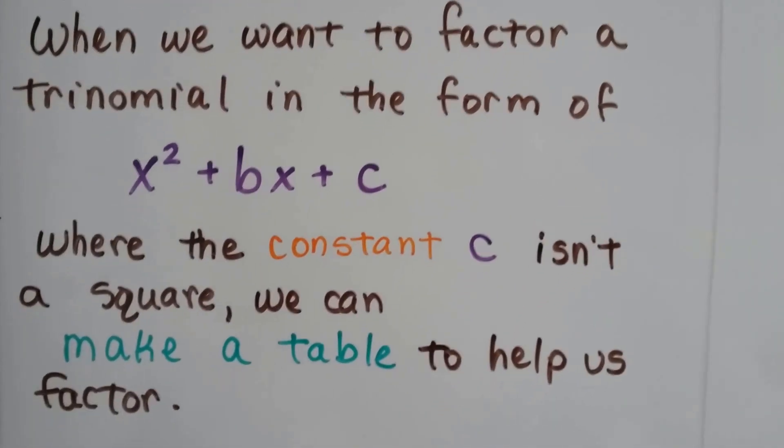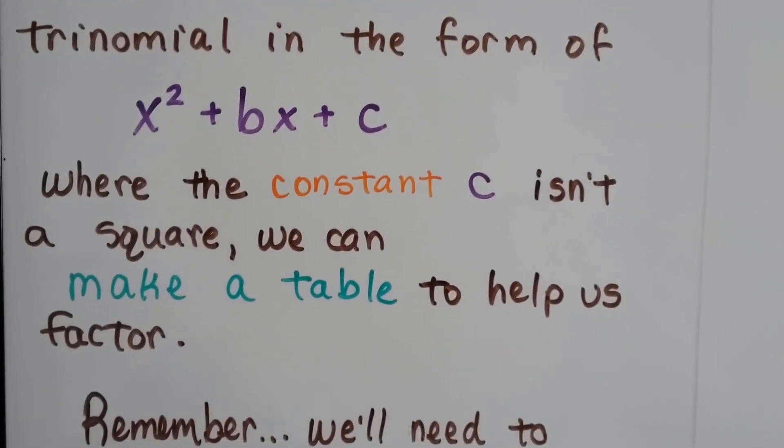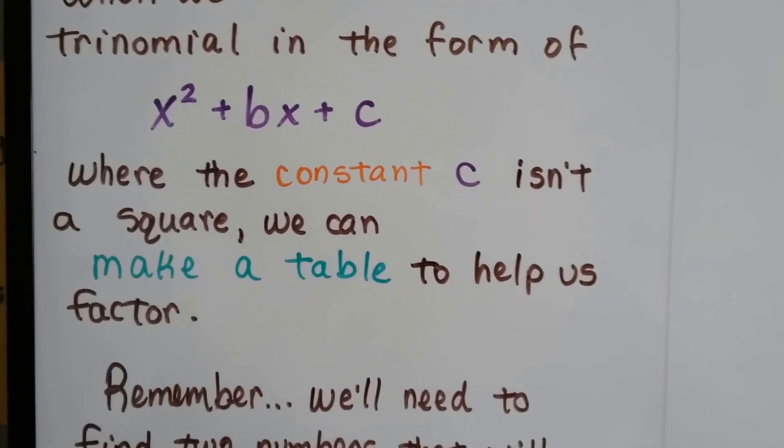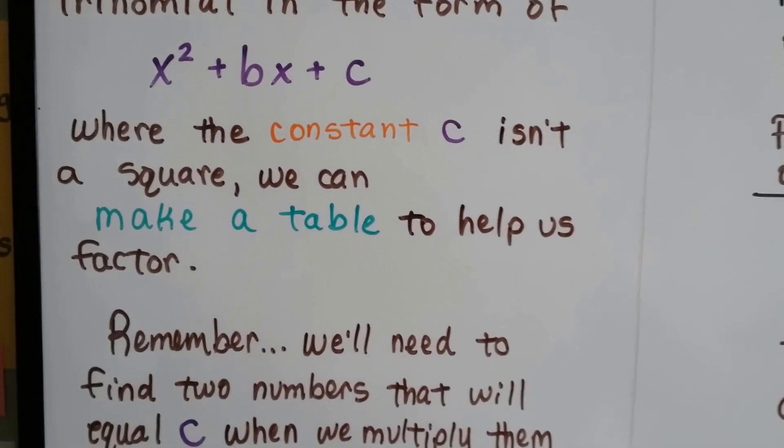When we want to factor a trinomial in the form of x² + bx + c, where the constant c isn't a square, we can make a table to help us factor it.